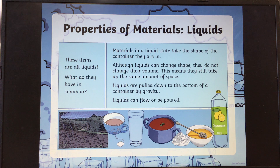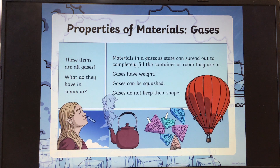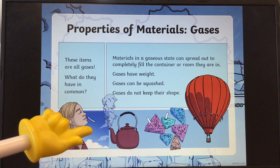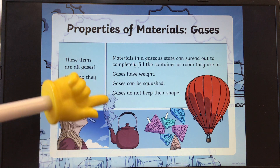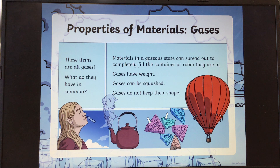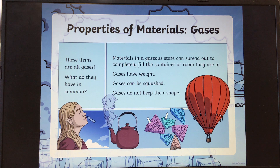And then finally, these items are all gases. This was oxygen if you remember, and the steam coming from the kettle. Materials in a gaseous state can spread out to completely fill the container or room they are in. Gases have weight. They can be squashed and they do not keep their shape.